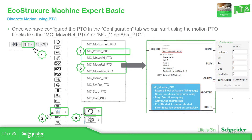If we continue, once you have made the configuration of the PTO and selected the right PLC, you can go to the programming and then select from the function block list the PTO functions, and then you need to select the motion function blocks.